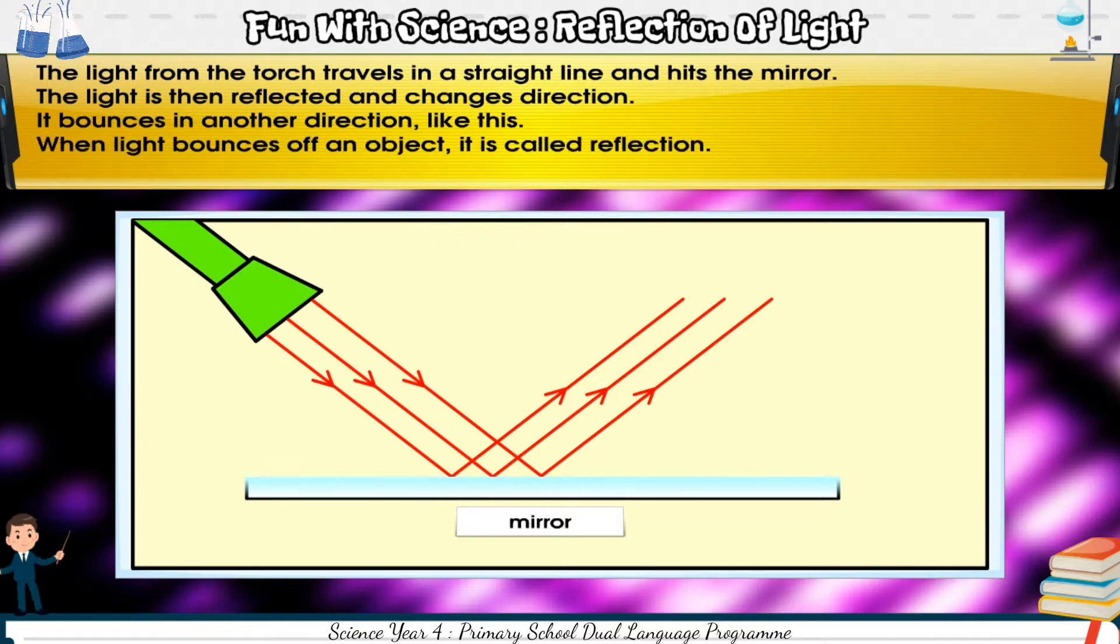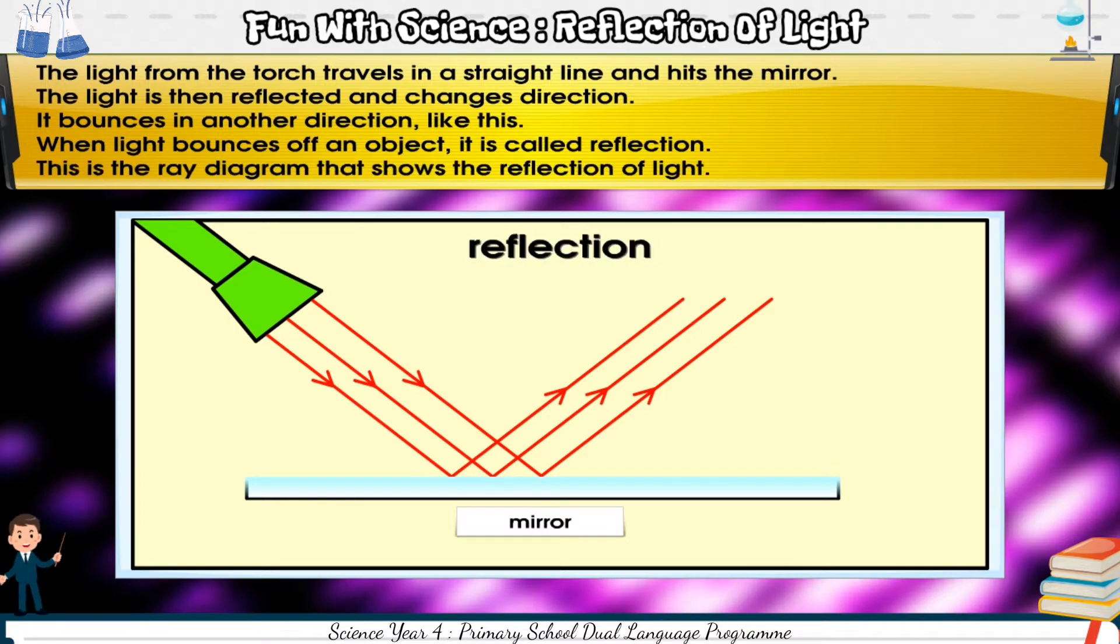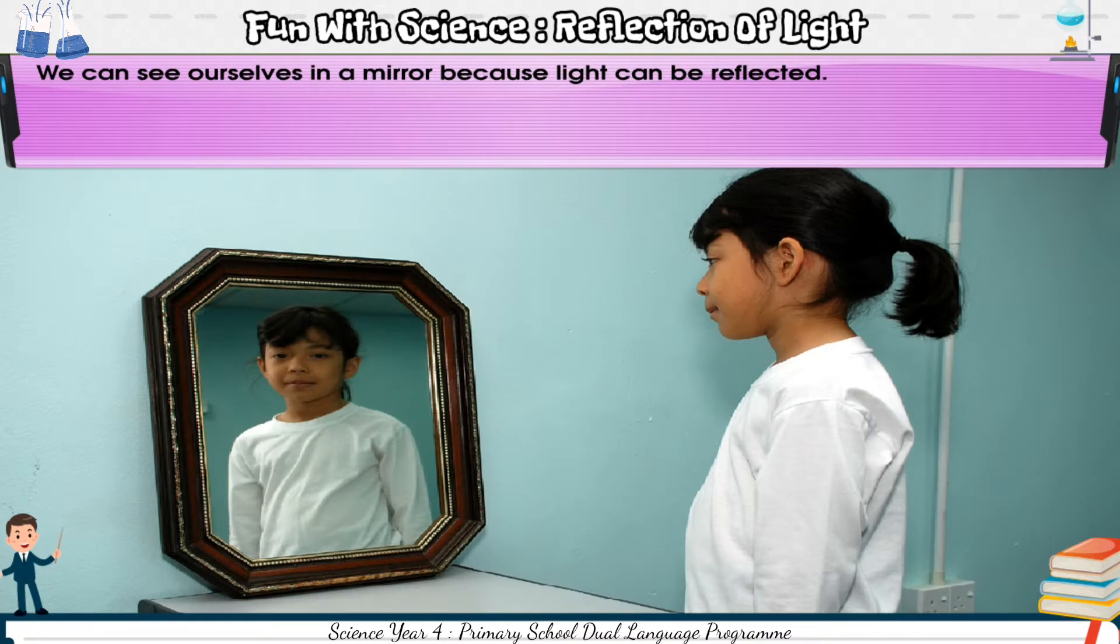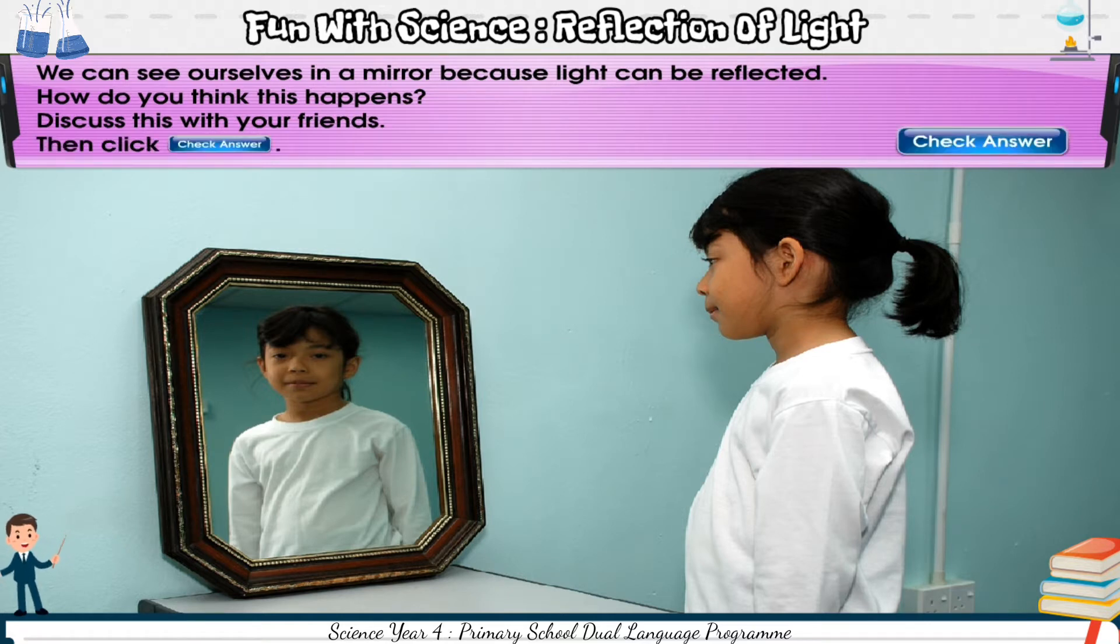When light bounces off an object, it is called reflection. This is the ray diagram that shows the reflection of light. We can see ourselves in a mirror because light can be reflected. How do you think this happens? Discuss this with your friends. Then click check answer.